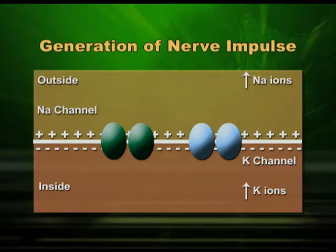In this diagram, the nerve membrane is shown which is positively charged outside and negatively charged inside — it is in a resting potential. Now a stimulus is provided at point A, and from point A it has to move further along the membrane. What will happen at that point when the stimulus is given?